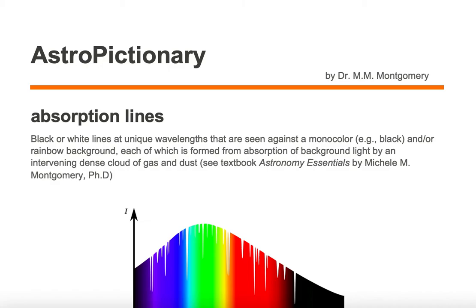Absorption lines are black or white lines at unique wavelengths that are seen against a monocolor such as black, or rainbow background, each of which is formed from absorption of background light by an intervening dense cloud of gas and dust.